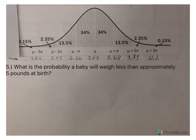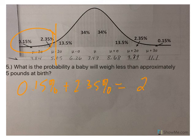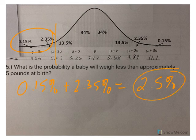Number five: what is the probability a baby will weigh less than approximately 5 pounds at birth? Using the empirical rule, we have to say approximately. This is approximately 5. So less than that would be everything to the left. That's 0.15% plus 2.35%, which means the probability is 2.5%. So if you're having a baby, you have a 2.5% chance of that baby weighing less than 5 pounds.